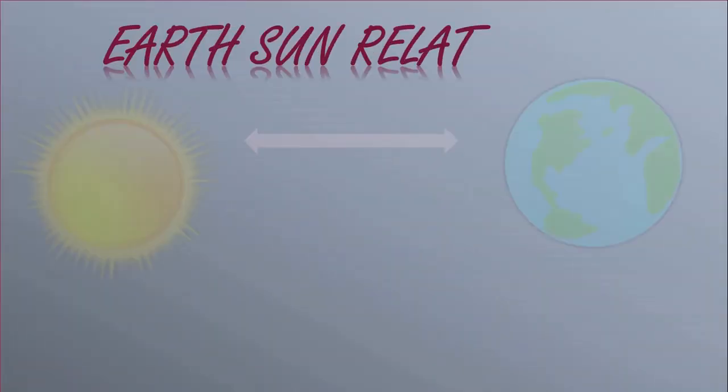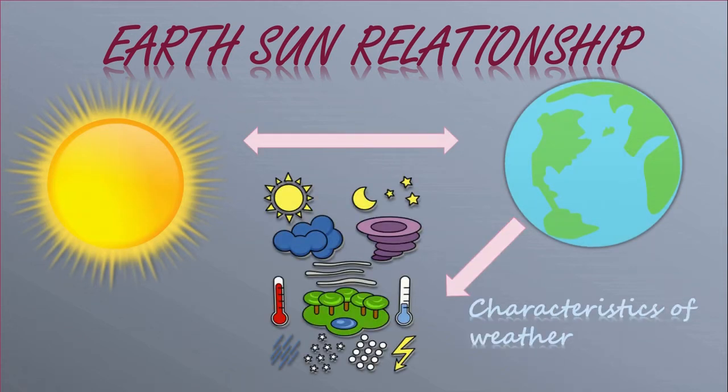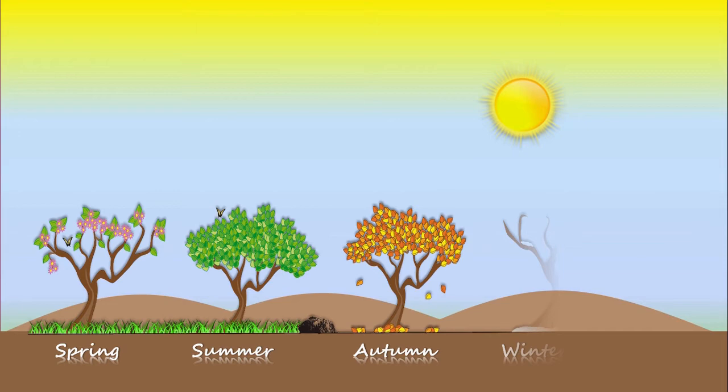Earth-Sun relationships are important as they help us to understand the characteristics of climate on Earth. They are in charge for daily and seasonal cycles of energy and temperature.